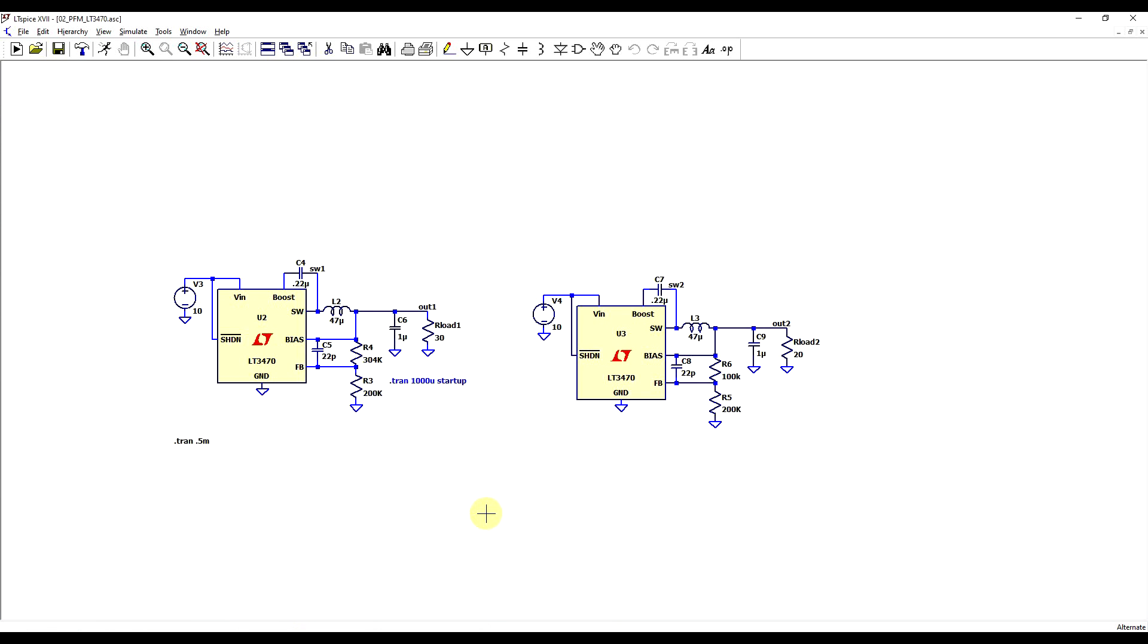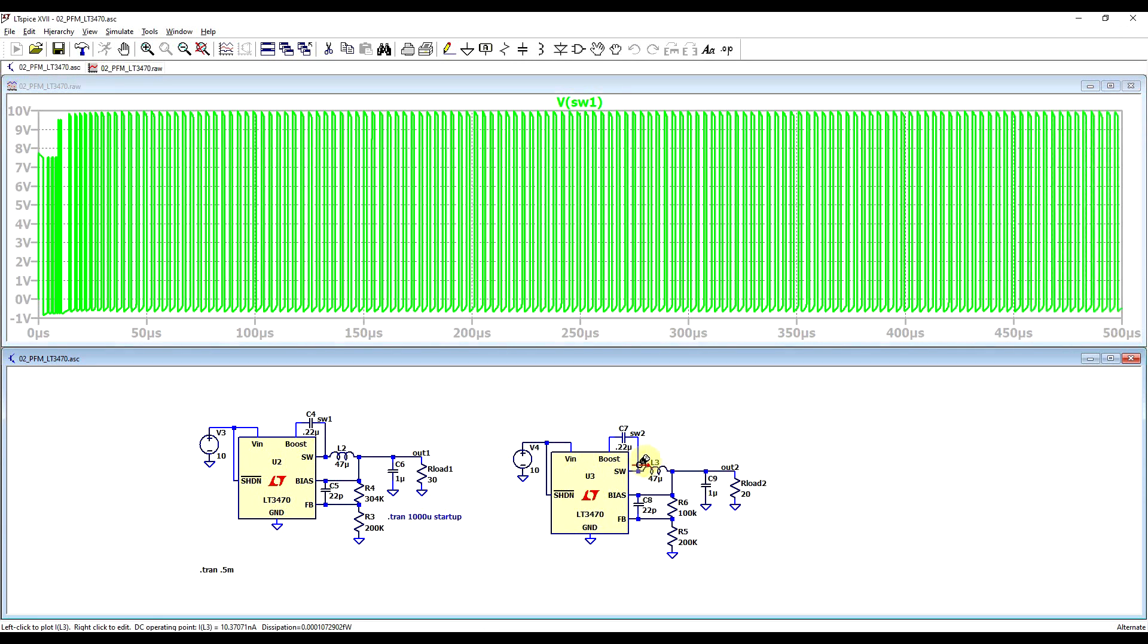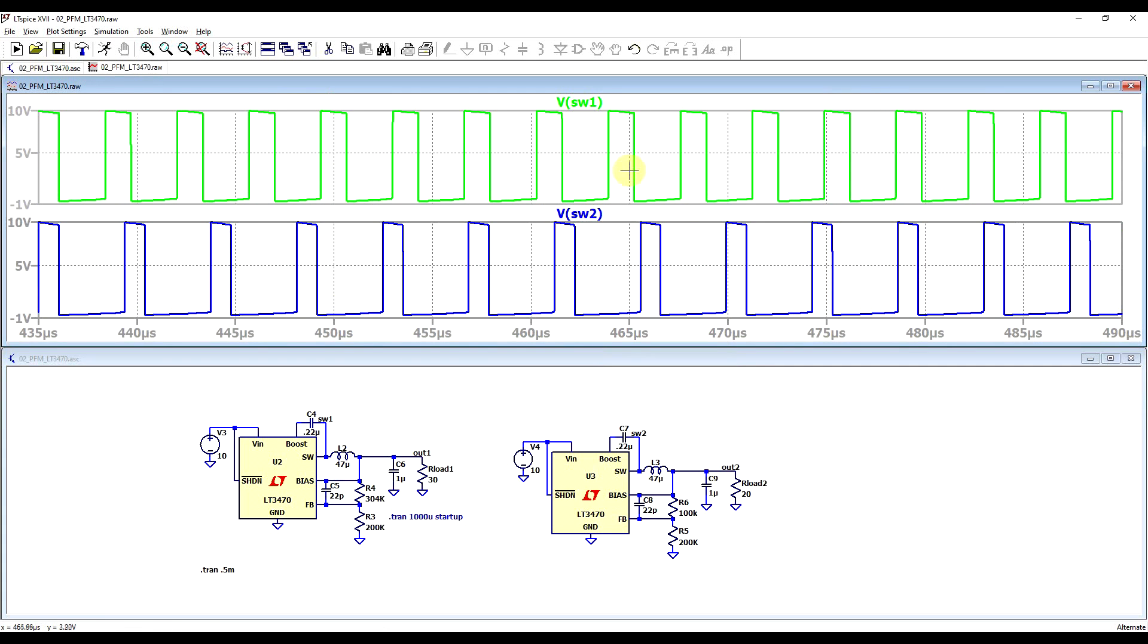If we now turn to a pulse frequency modulated supply, we can take the example of the LT3470. Here I made two copies of the same circuit, and I just used different feedback resistors to get different output voltages. So if we run this circuit and again we look into the switching node, and look at the end where the output is more or less stabilized, we can observe that the on time is almost the same in both cases, but the total period is different. So on the upper side it's around 3.6 microseconds, on the lower side it's around 4.2 microseconds, so we have clearly different switching frequencies.